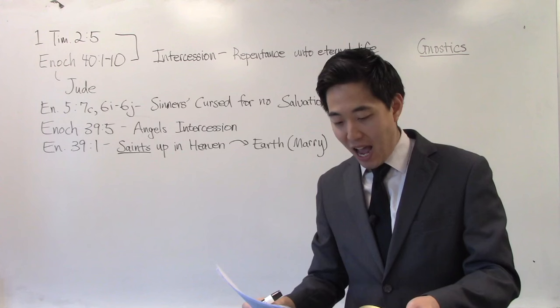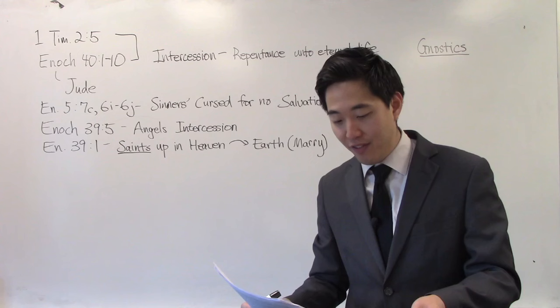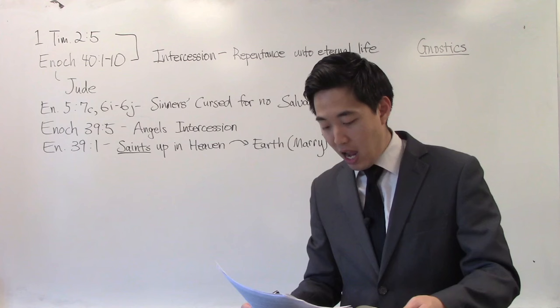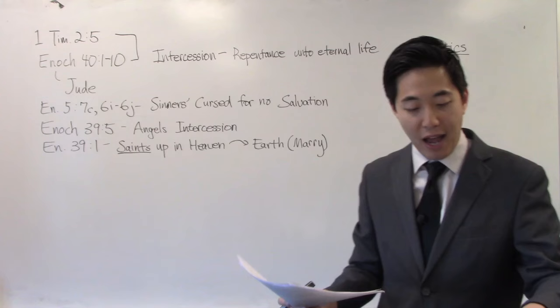Enoch chapter 39, verse 1 says, And it shall come to pass in those days that elect and holy children will descend from the high heaven and their seed will become one with the children of men. And in those days, Enoch received books of zeal and wrath and books of disquiet and expulsion. That is heresy.